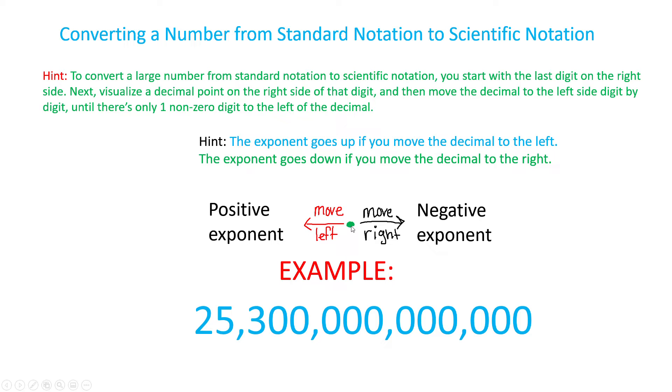Here's your decimal — move to the left and you will have a positive exponent. Here's your decimal again — move to the right and you have a negative exponent.